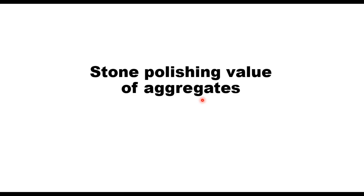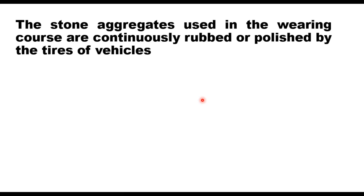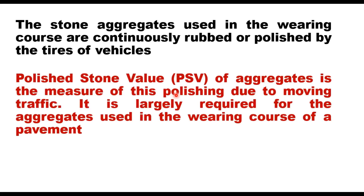Hello friends, today we shall discuss the method of determining the stone polishing value of aggregates. The stone aggregates used in the wearing course are continuously rubbed or polished by the tires of vehicles. This rubbing action causes smoothening of the surfaces of aggregate, increasing the chances of skidding. This happens due to reduction in friction between the aggregate surface and tires. The polished stone value is the measure of this polishing due to moving traffic, and is largely required for aggregates used in the wearing course of a pavement.